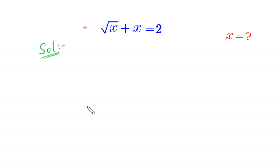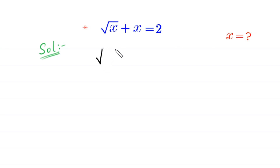Hello, welcome. Solve this algebra equation: square root of x plus x is equal to 2. We need to find all possible values of x. Let's start by moving the plus x to the right hand side. This equation will become: square root of x is equal to 2 minus x.